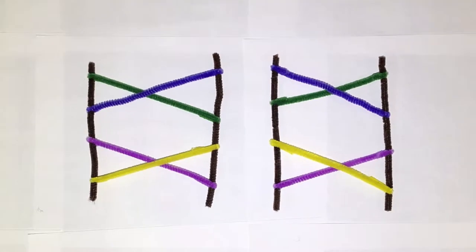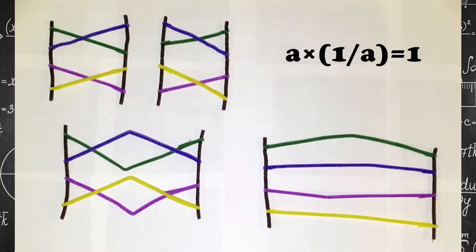The inverse of a braid can be obtained by reflecting the whole braid over one of its planes. a times 1 over a equals 1. And 1 is identity braid.